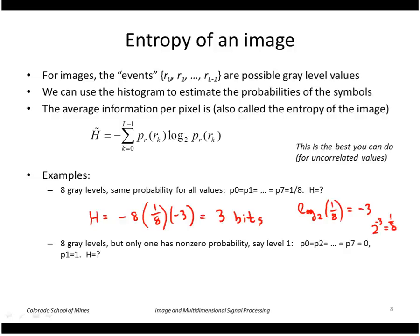Another case: let's say we have 8 gray levels, but only one of them has a non-zero probability, say p1. In that case, H is, if I take all the ones that are zeros, I have 7 of those, and log base 2 of 0. Then I have 1 with probability 1 and log base 2 of 1. This is 0, and log base 2 of 1 is 0 as well. So this is just 0 bits.